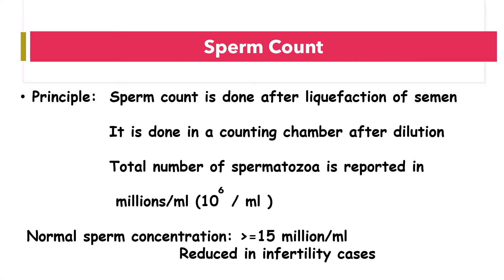The first question is sperm count. Sperm count is done after liquefaction of semen, which usually takes around 40 minutes. It is done in a counting chamber after dilution. Sperm count or concentration is reported in millions per ml, that is 10 to the power 6 per ml. The normal sperm concentration is equal to or more than 15 million per ml, and it is reduced in cases of infertility.